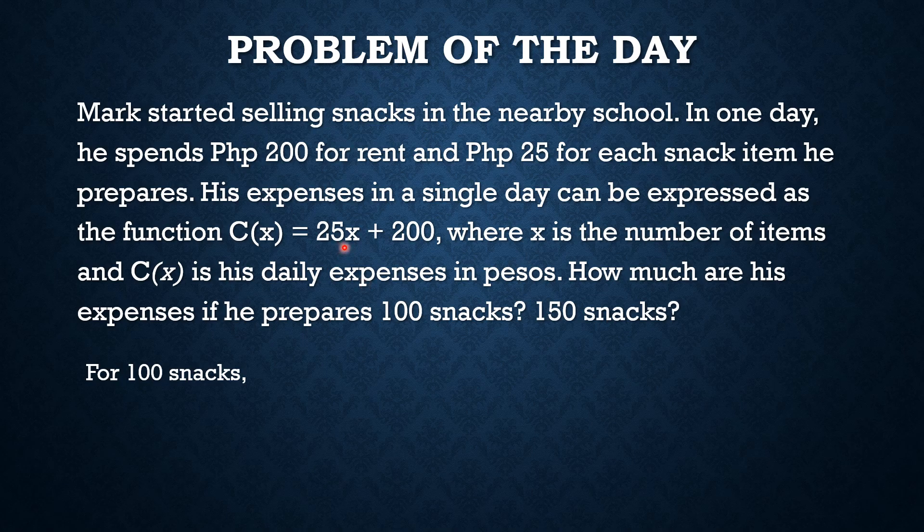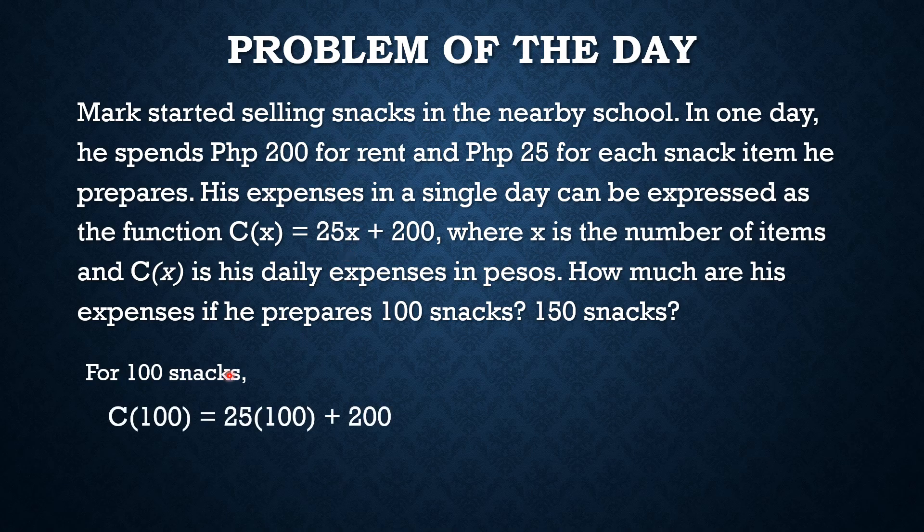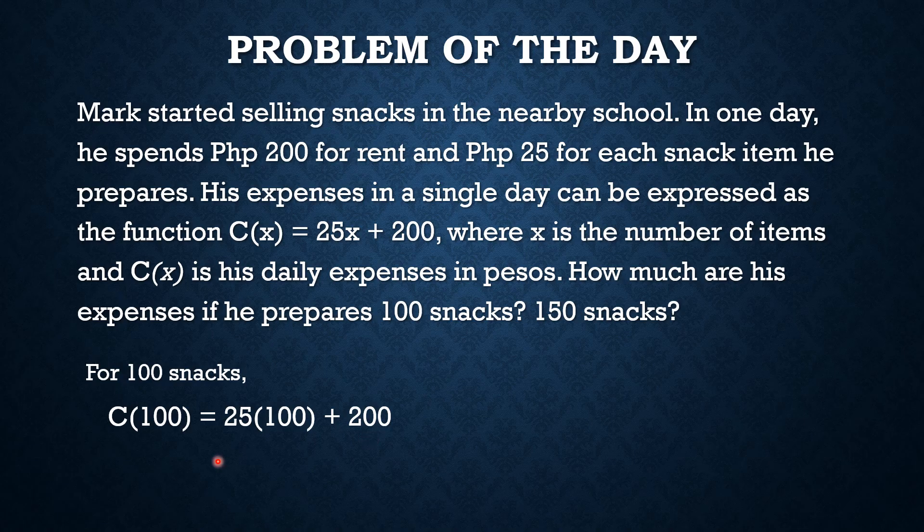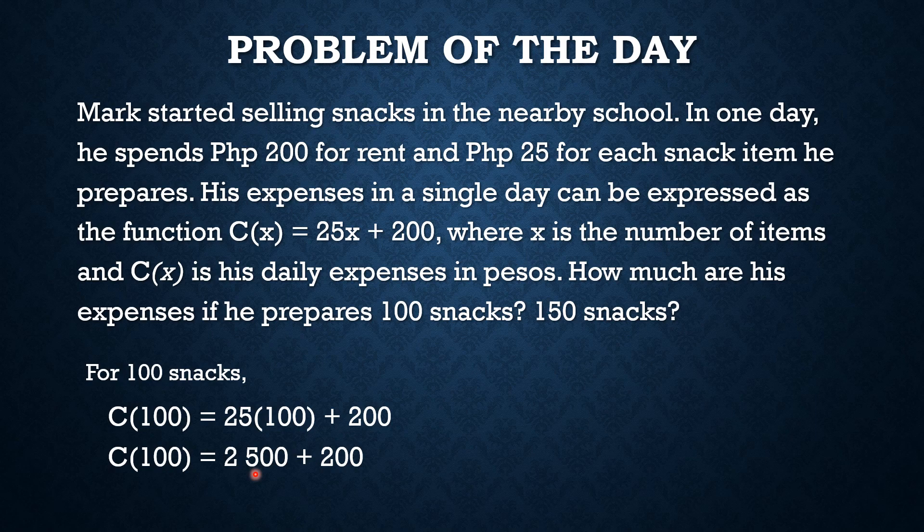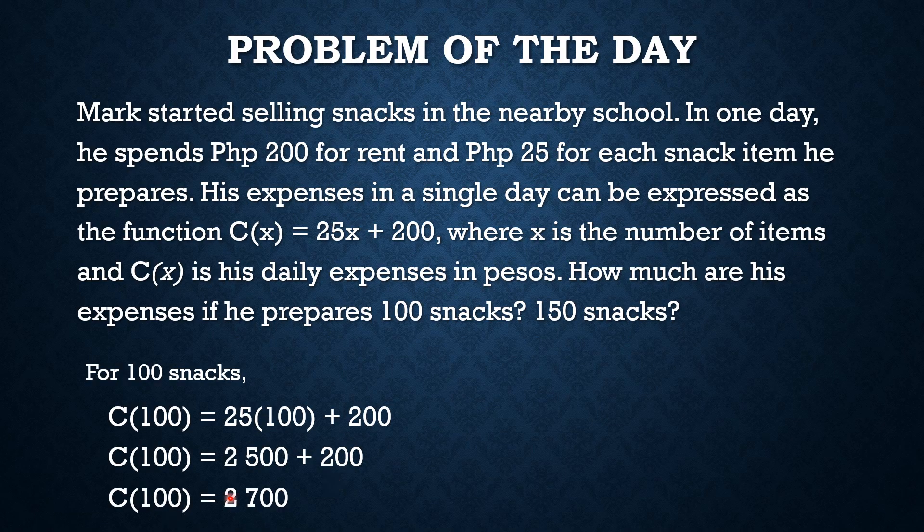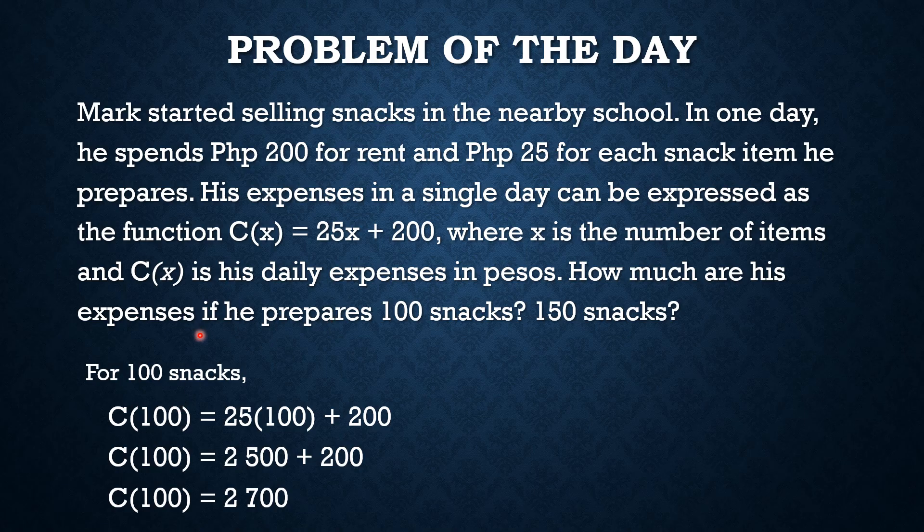Palit lang natin si 100 dun sa ating function, sa mga x dun sa ating function, and so we have c(100) = 25 times 100 + 200. And we know that 25 times 100 is 2,500. So we still have plus 200 here, and 2,500 + 200 = 2,700. This means that for 100 snacks, ang expenses na kailangan niya ihanda ay 2,700 pesos.